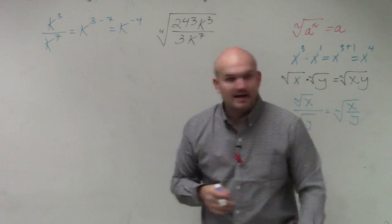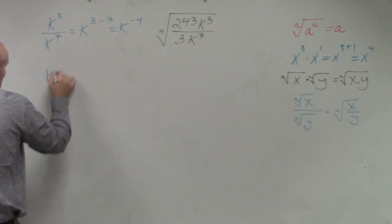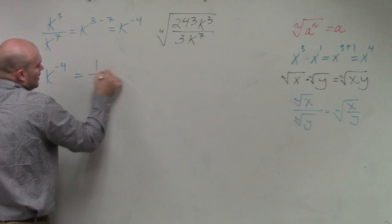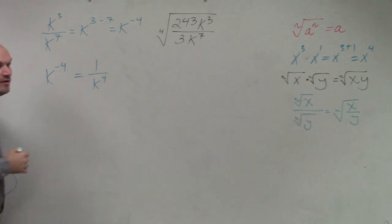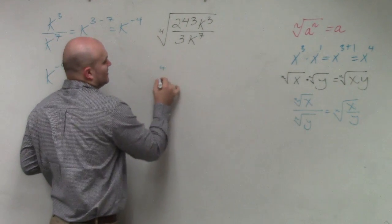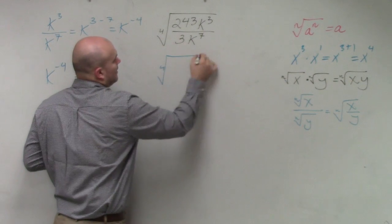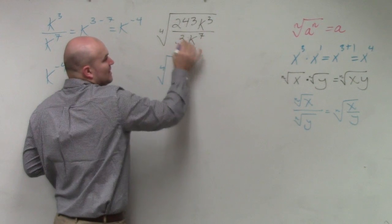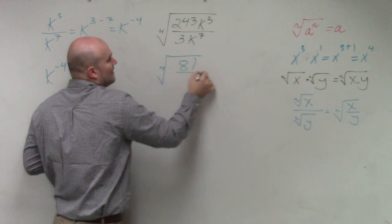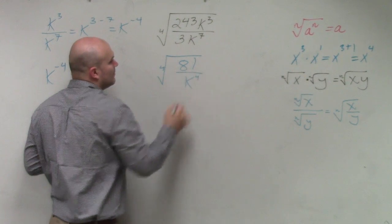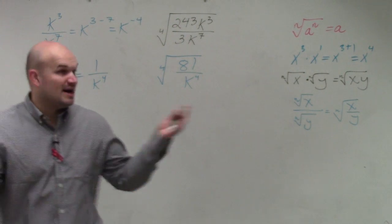And if you remember, k to the negative 4 is equal to 1 over k to the fourth. So my simplified answer right now is the fourth root of 243 divided by 3 is 81, and then this is k to the fourth power over there. So I simplified it.